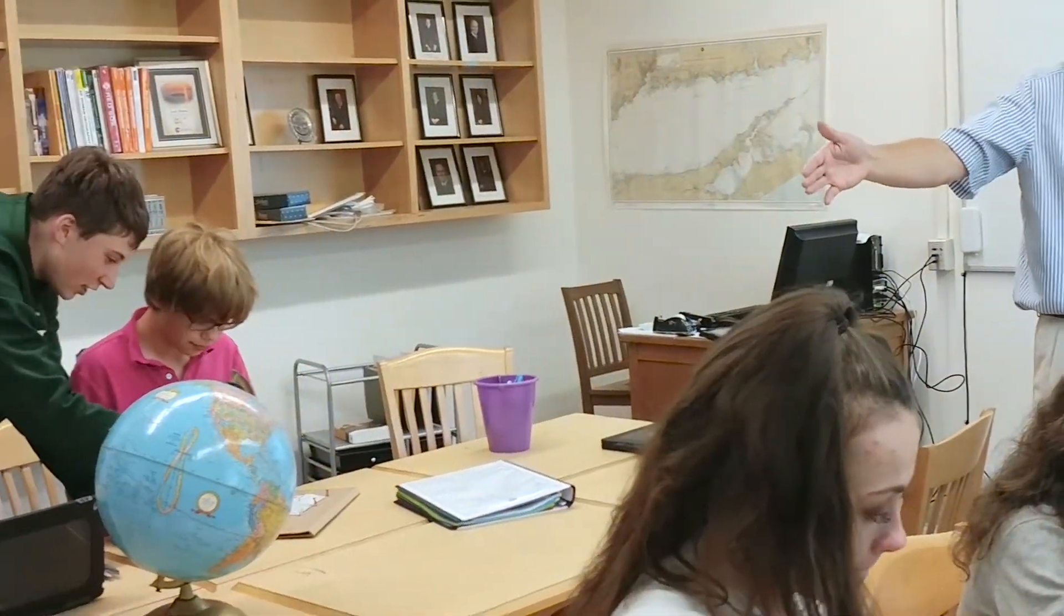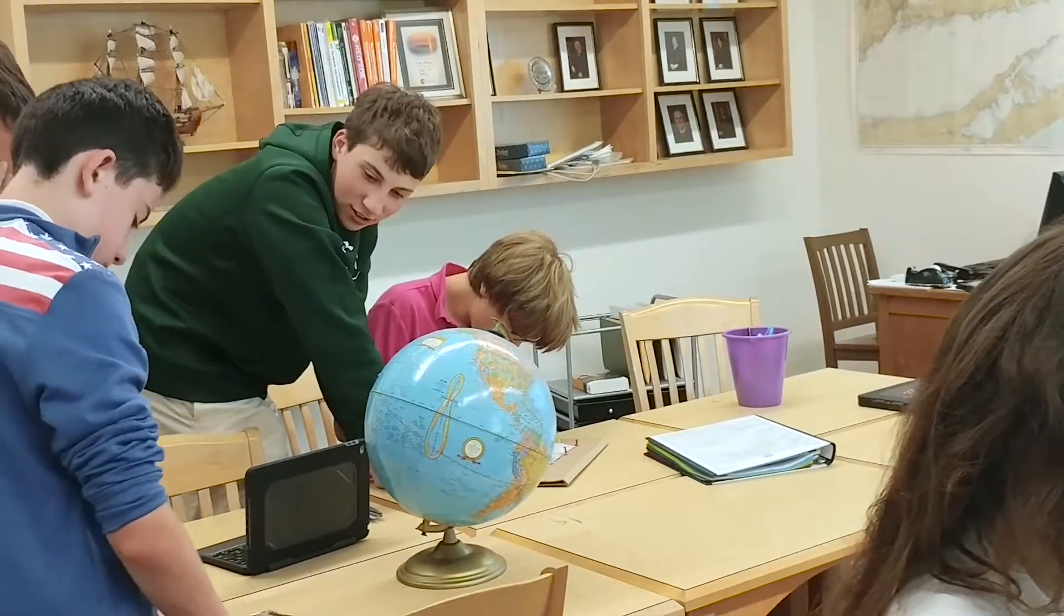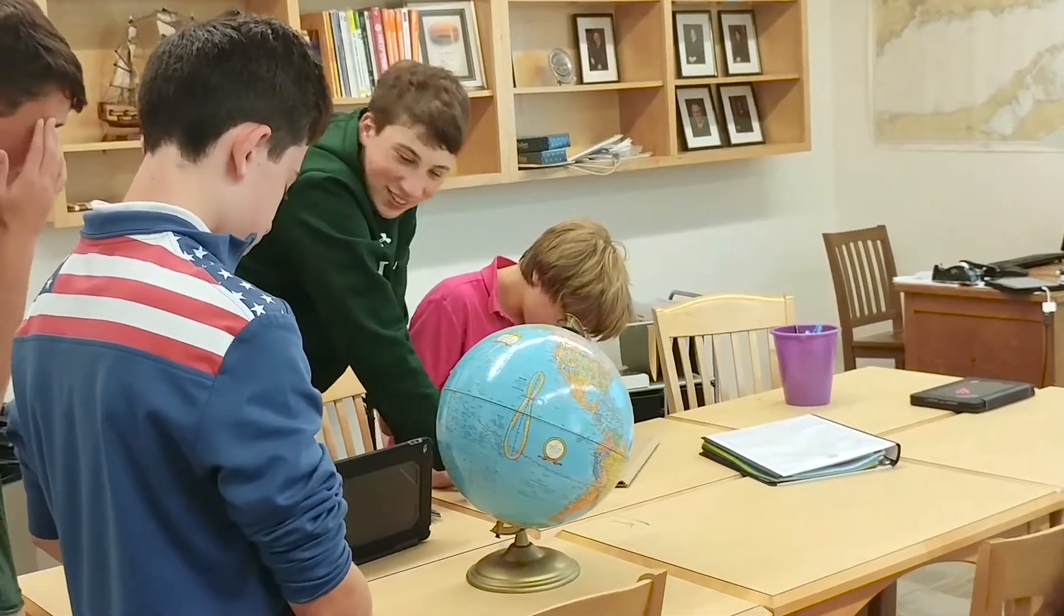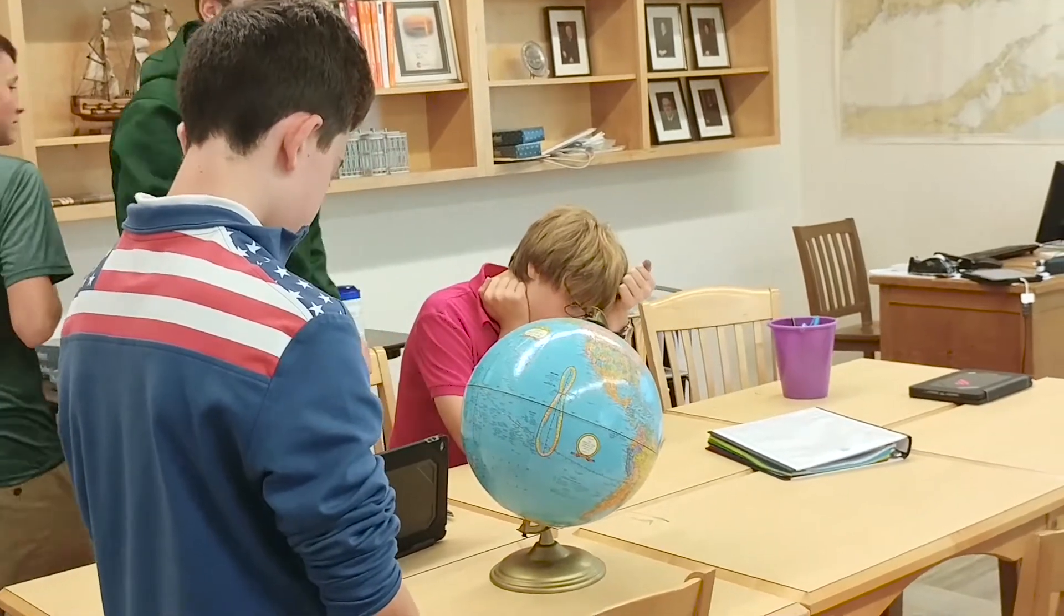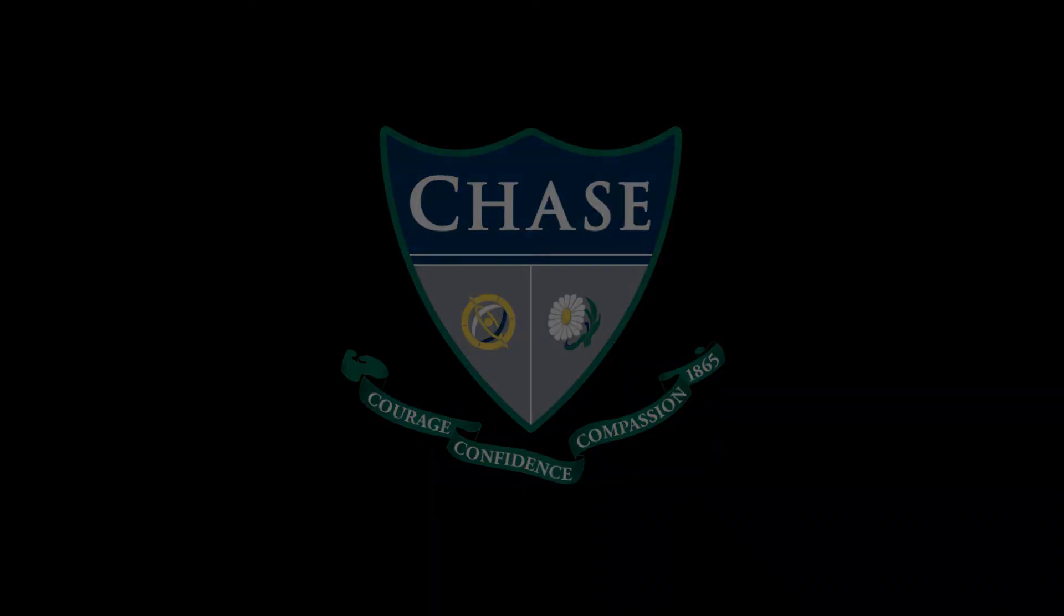And it shows how that's not right. So it shows how the globe is an actual representation of the earth, but when you try to flatten it out, make it into a map, it's going to get, what's the word? Distorted. Distorted. All right.